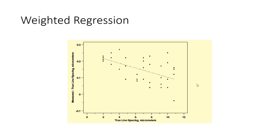Another type of regression equation known as weighted regression is used when the data points behave like the one you can see on the screen.